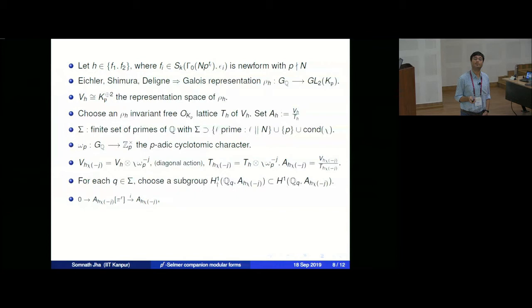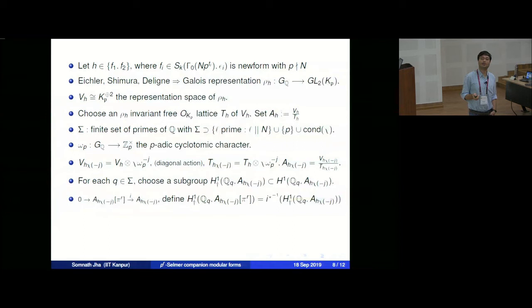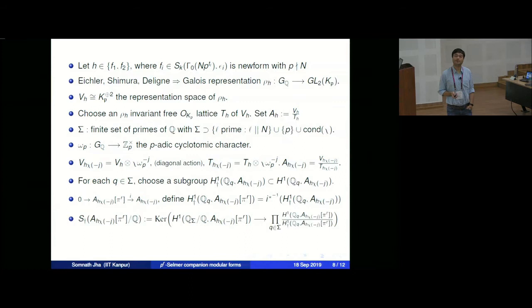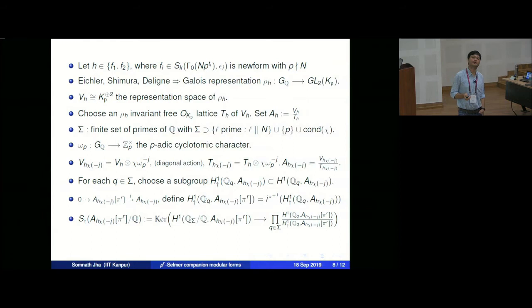Once I specify the dagger condition, it will give the Bloch-Kato Selmer group. The Bloch-Kato condition is: at Q not equal to p, it is the unramified condition; at p, it is the finite condition H^1_f. The unramified condition is the kernel of the map from H^1(Q_Q, −) to H^1(I_Q, −), where I_Q is the inertia group. At p, using the Fontaine period ring B_{cris}, the finite condition H^1_f is the kernel of the map involving B_{cris}.